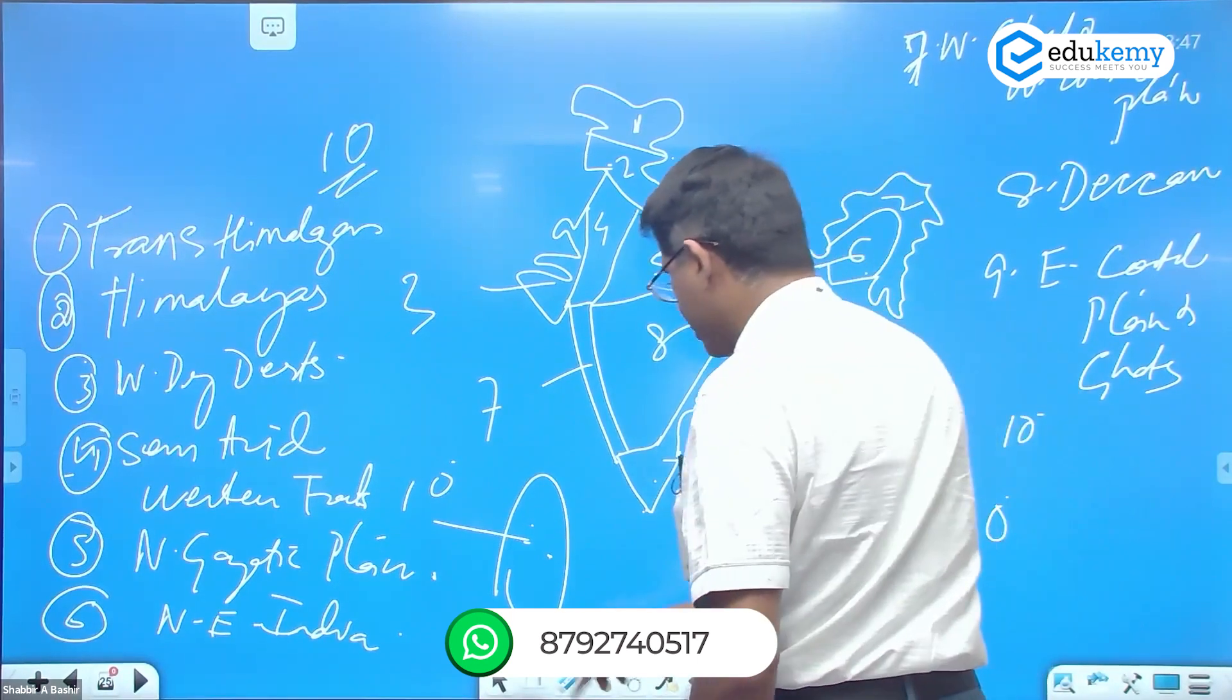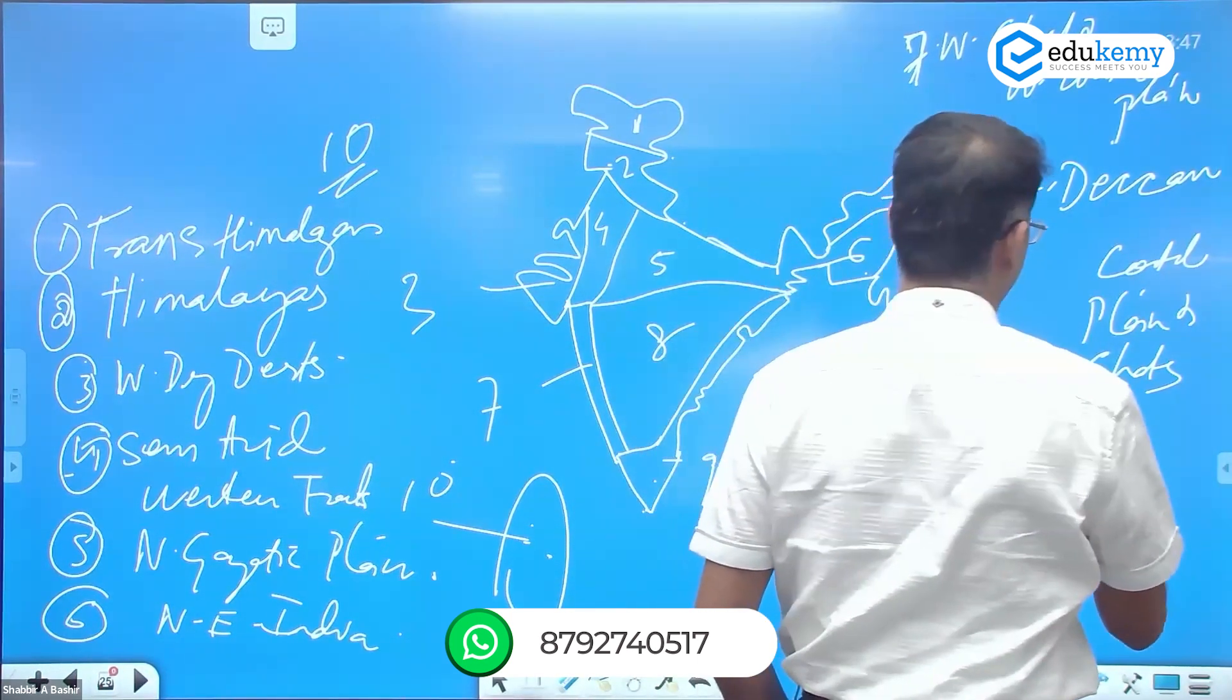Ten is - it's not actually east, it's actually simply coastal plains - and ten is islands.